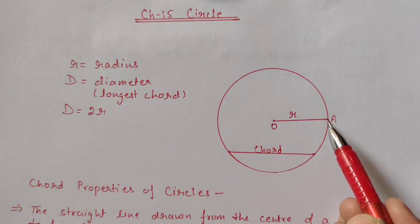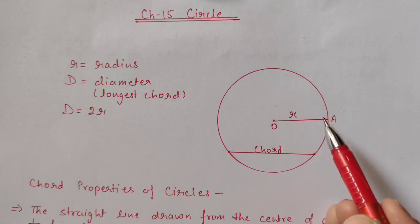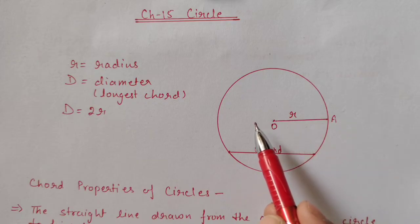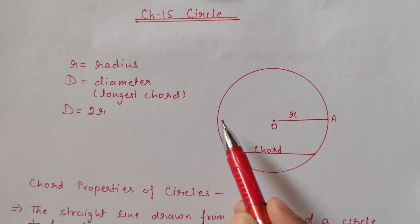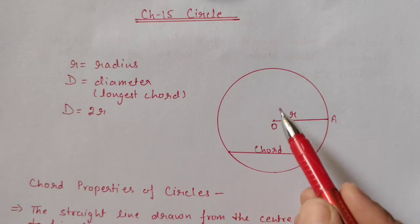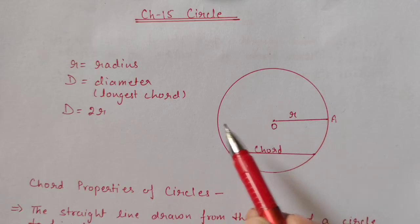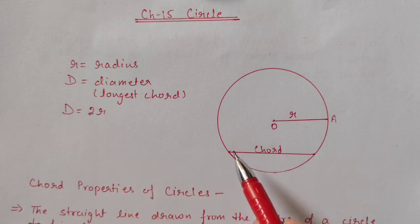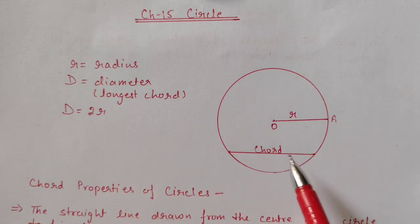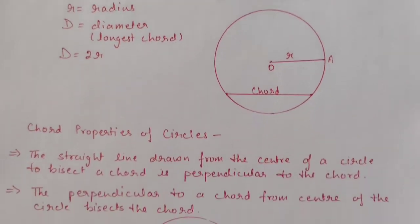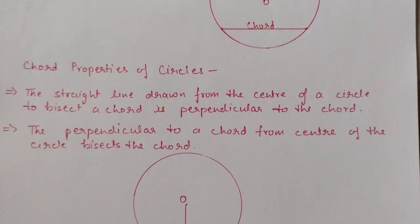From the center to the edge of the circle, this distance is called the radius. If you extend the radius in the opposite direction, that is called the diameter. The diameter divides the circle into two equal halves and is double the radius. If we join any two points on the circle, we get a straight line segment called a chord.